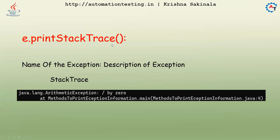So e.printStackTrace() — what exactly will it print? It will print the name of the exception, colon, description of the exception, and then the stack trace. For example, you see java.lang.ArithmeticException — that is the exception name — colon, description of that exception, which is 'division by zero', and then the stack trace showing where it is happening, in which program and on which line. This is how you get the output when you use e.printStackTrace().